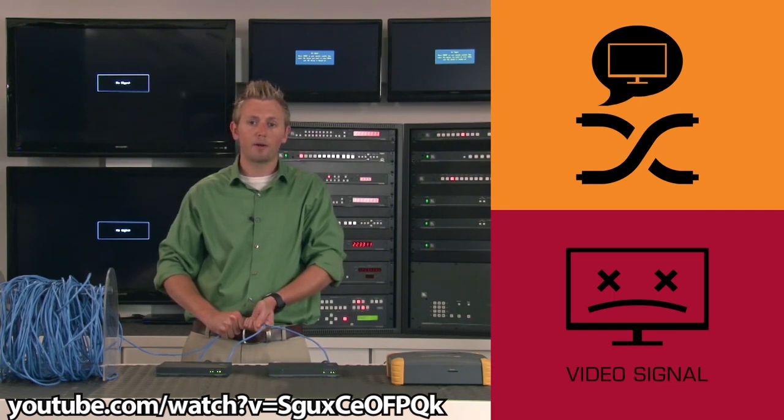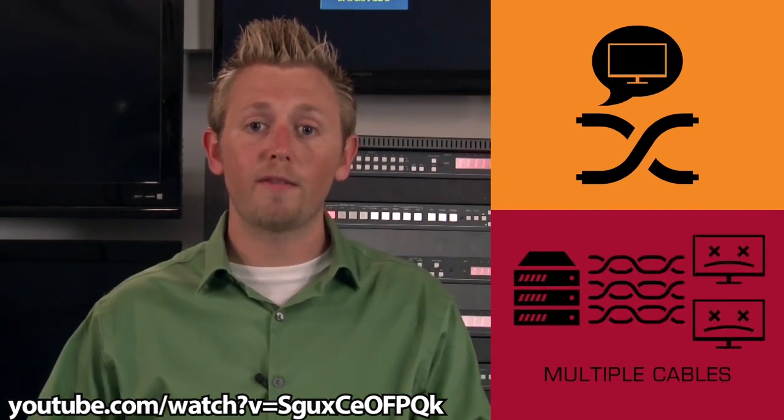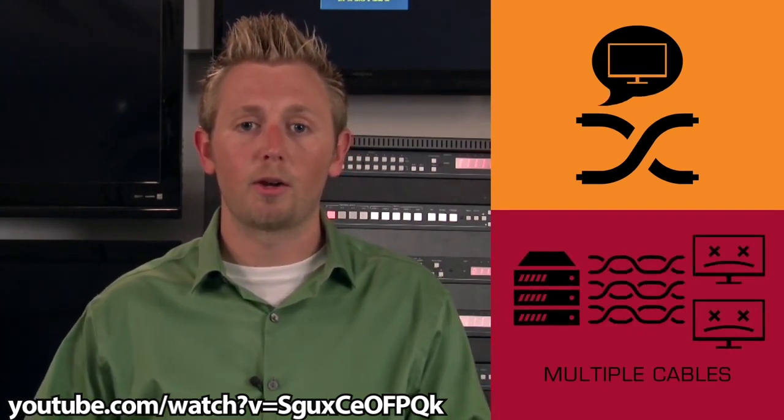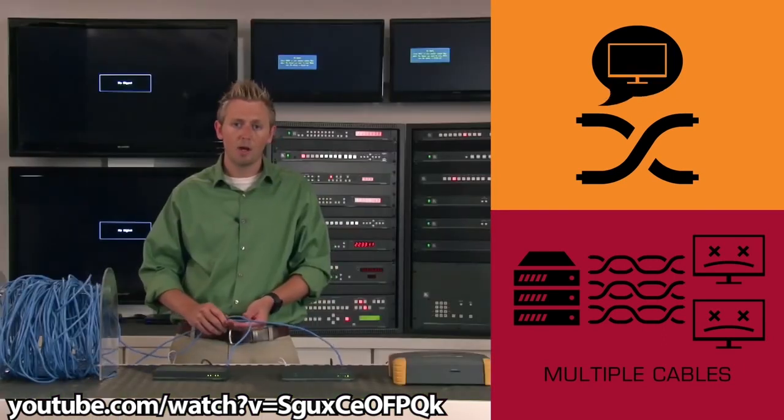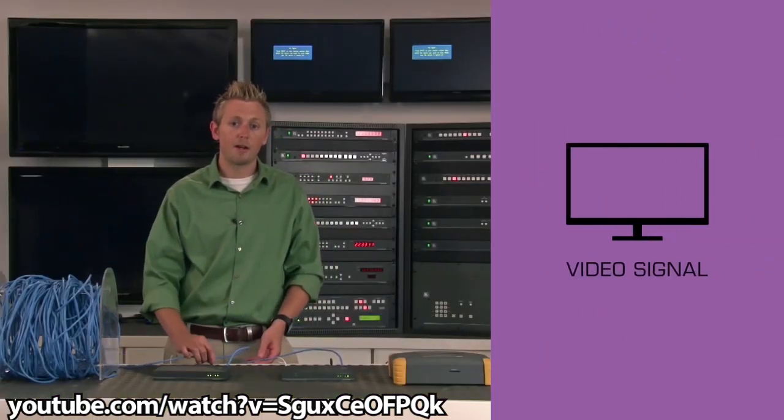By holding this pair together, I'm inducing enough crosstalk to collapse the signal. Imagine what happens when you have ten or even more twisted pair cables run next to one another from a rack up through a single piece of conduit. When I separate them, which reduces the crosstalk, my video signal returns.